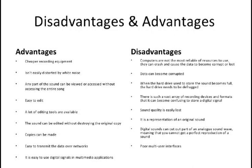The design of digital systems may be roughly divided into three stages: system design, logic design, and circuit design. System design involves breaking the overall system into subsystems and specifying the characteristics of each subsystem. For example, the system design of a digital computer involves specifying the number and type of memory units, arithmetic units, and input-output devices, as well as specifying the interconnection and control of these subsystems.